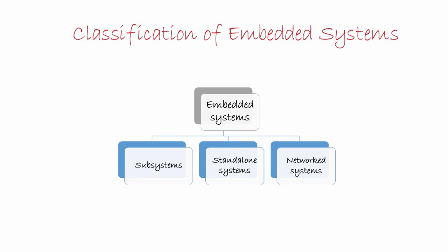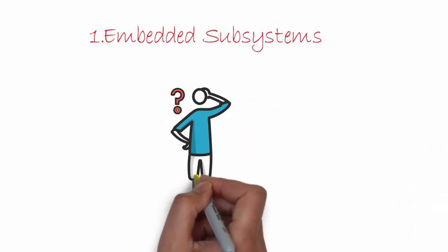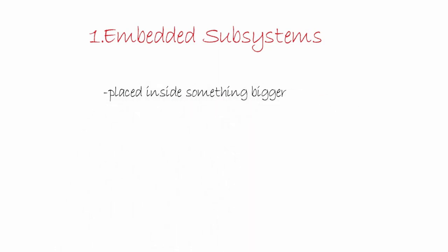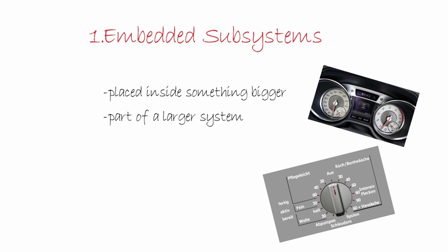Let's first look at the class called embedded subsystems. The term 'embedded' means placed inside something bigger. This flavor of embedded system is usually a part of a larger system — in fact, this is where the term 'embedded system' was originally coined. A popular example is a digital dashboard in your car: here the car is the larger system, and the display is embedded inside it. Other examples include the timing and display circuits of microwave ovens, washing machines, and dishwashers.